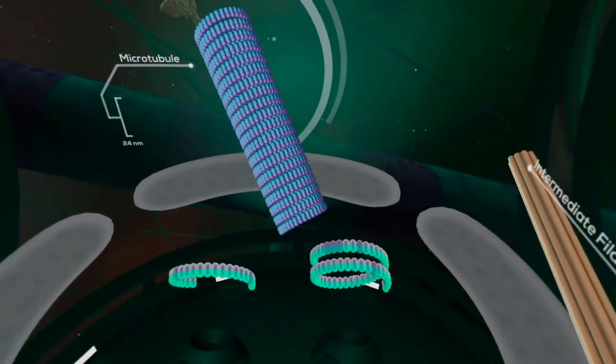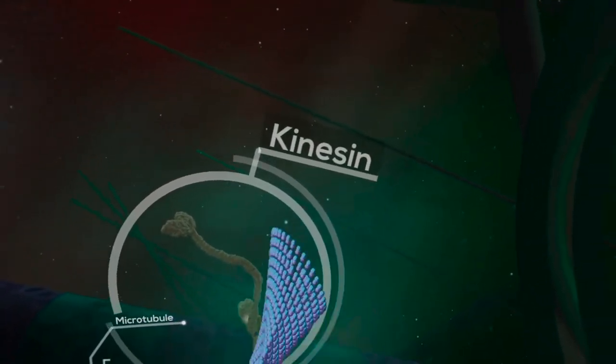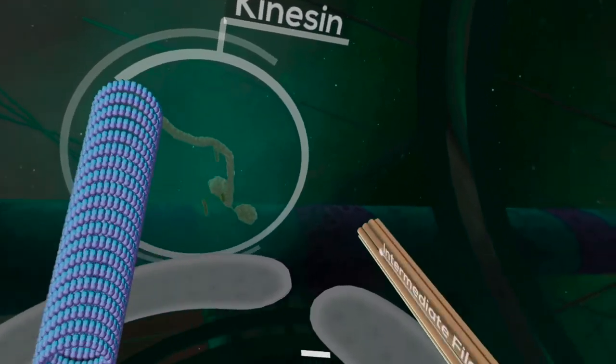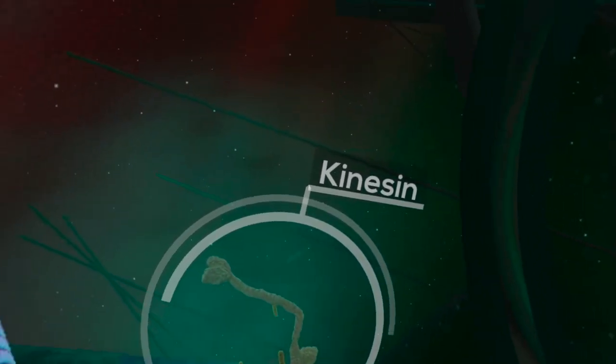A special type of protein, called kinesin motor protein, has the ability to walk along microtubules. It latches onto larger structures and transports them around the cell.